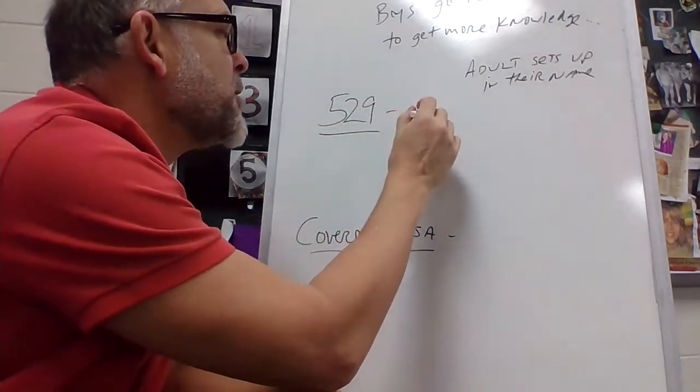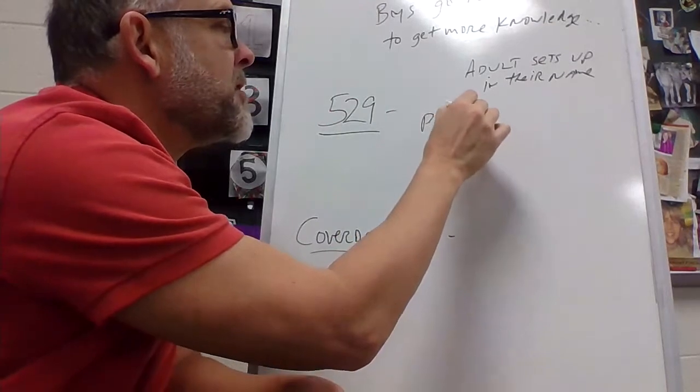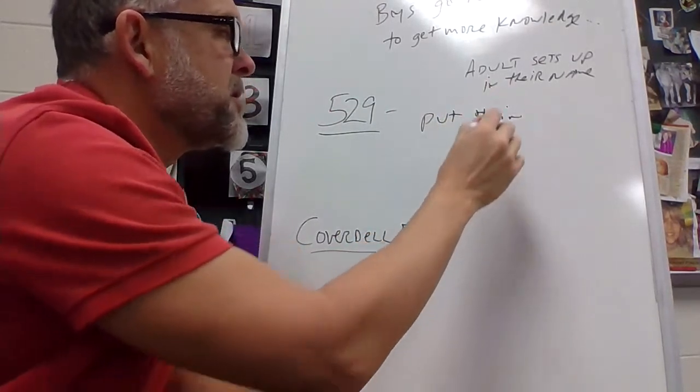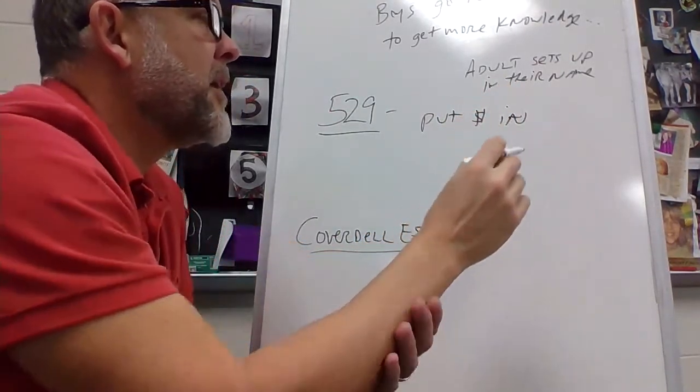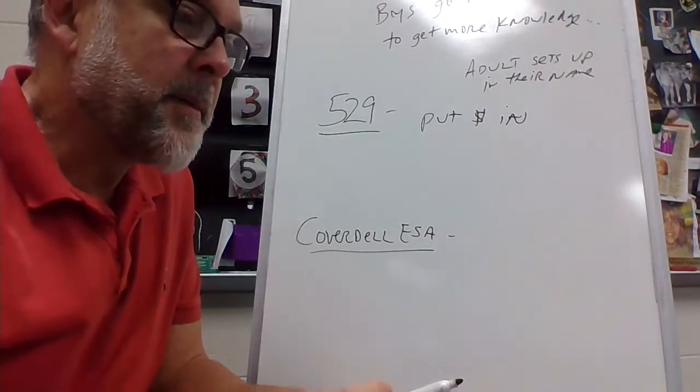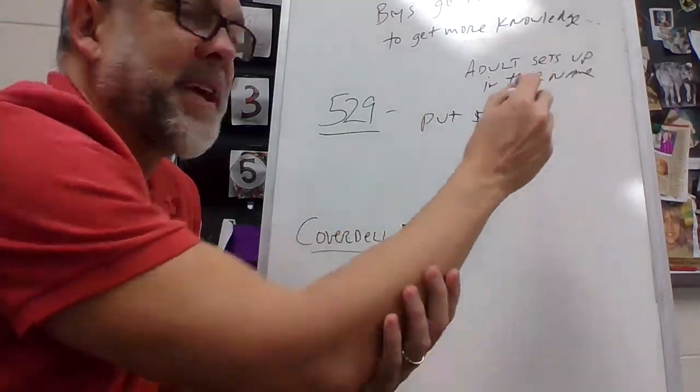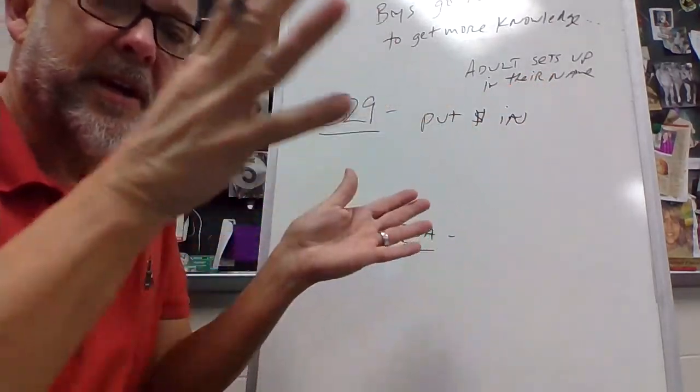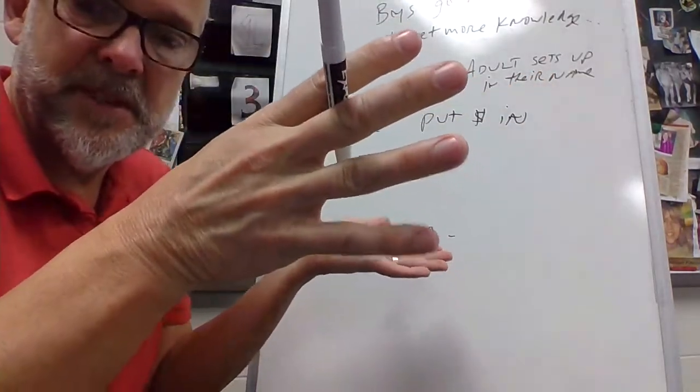With a 529, you put money in when the kid's little. These are both the same. You're hiring somebody to make those decisions. So basically, if you put it in when the kid's two, you're not going to need that for like 16 years.